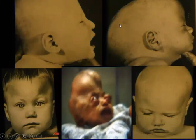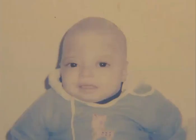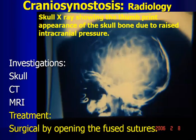Here we can see scaphocephaly, plagiocephaly, trigonocephaly, and various types of craniosynostosis. Radiologically, on skull X-ray, we can see what is called a thumb print appearance of the skull bone due to raised intracranial pressure. From inside the skull, there will be remodeling and thinning of the bones due to raised intracranial pressure. CT and MRI can be done to better evaluate the condition.